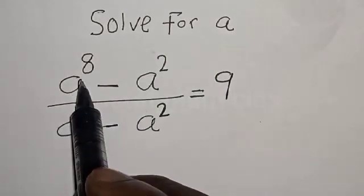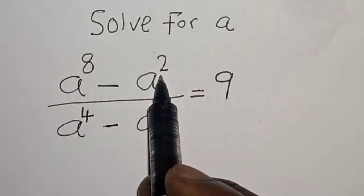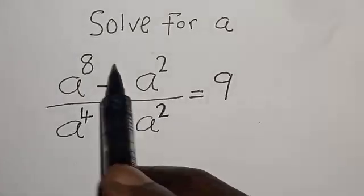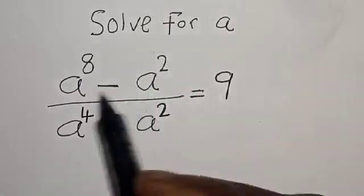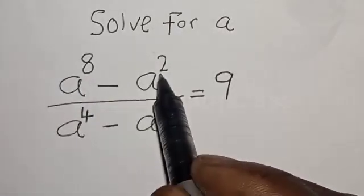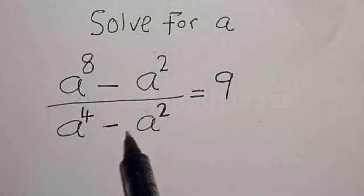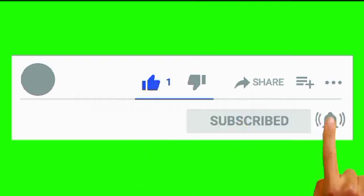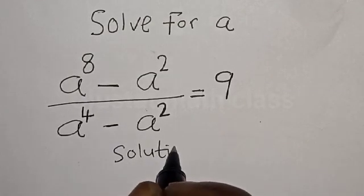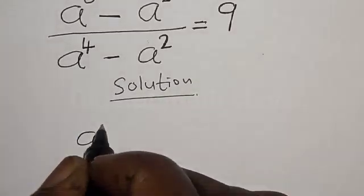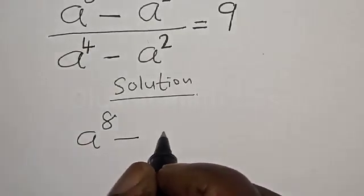Solve for x: a raised to power 8 minus a squared, divided by a raised to power 4 minus a squared, is equal to 9. Hi everyone, welcome to my class. In this class we want to find the value of a from this given equation: (a⁸ - a²) / (a⁴ - a²) = 9. But before we proceed, please don't forget to like, share, comment and subscribe.